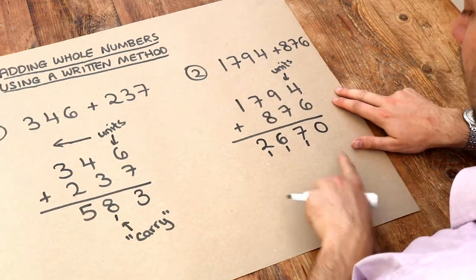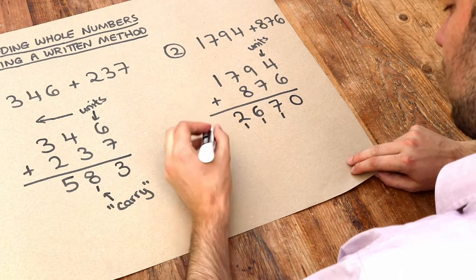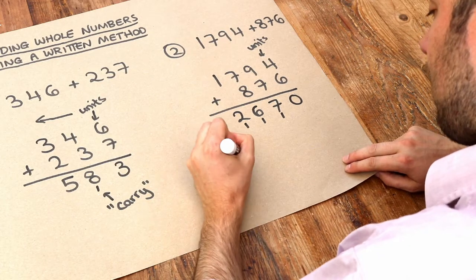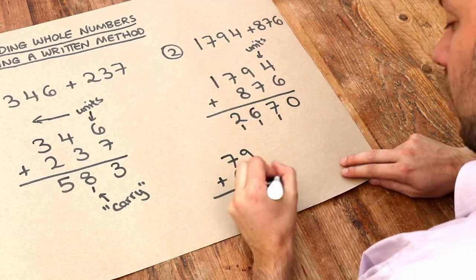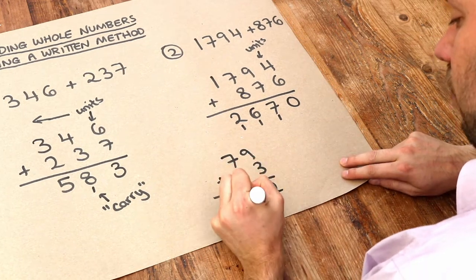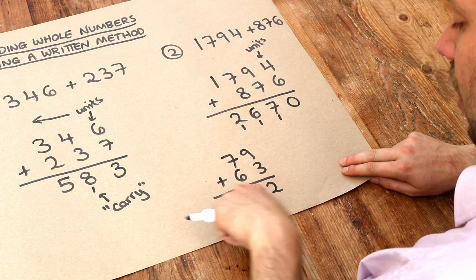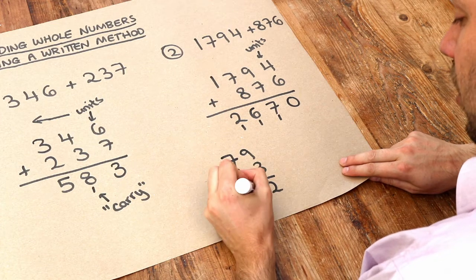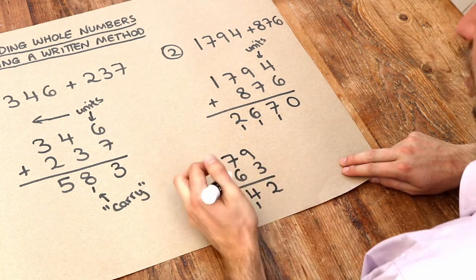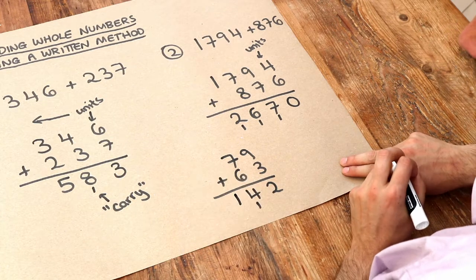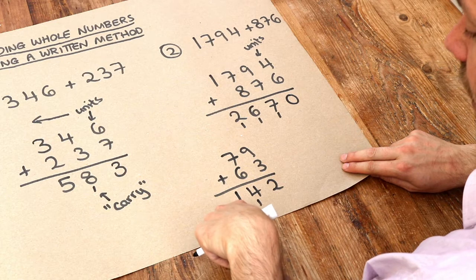Now you might wonder what happens if we still have a carry when we get to the end. So if I just do a quick example, let's say we had 79 plus 63. Now when we do 9 plus 3 that's 12, so we put the 2 here, carry of 1. Now 7 plus 6 is 13, plus the 1 is 14. So we put the 4 here, the units digit. Now if we've got no digits left to add, we just literally write 14. So that carry of 1 just becomes a digit to the left of your number.